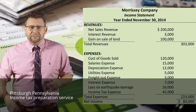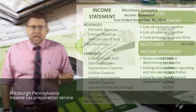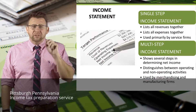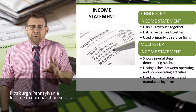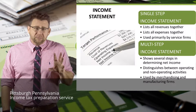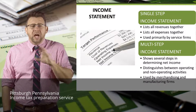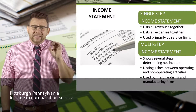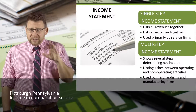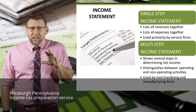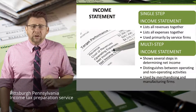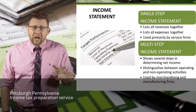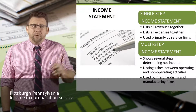A multi-step income statement still lists revenues and expenses, but it separates operating revenues and expenses from non-operating revenues and expenses, and divides the accounts into important subtotals that highlight areas of importance for investors and creditors. The subtotals include gross profit and operating income.